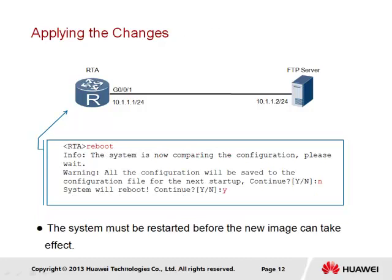When it has been confirmed that the correct VRP image has been configured for next restart, the device should be rebooted to allow changes to take effect. The system should be in user view to perform the reboot, using the 'reboot' command. The device will not reboot, however, until configuration changes have been saved or discarded. The prompt indicates that all configuration will be saved to the configuration file as part of the reboot process; if changes are not to be saved, the 'N' option should be chosen.